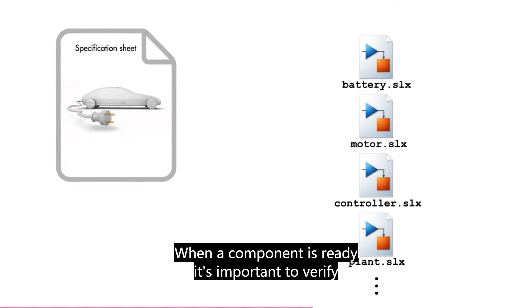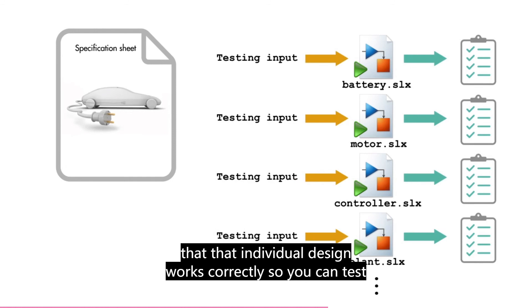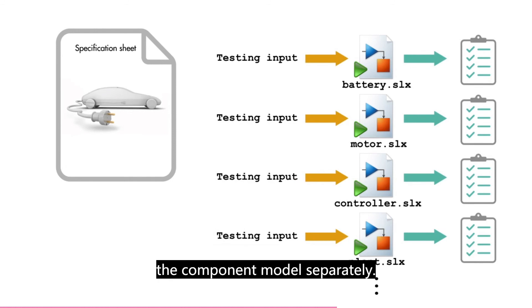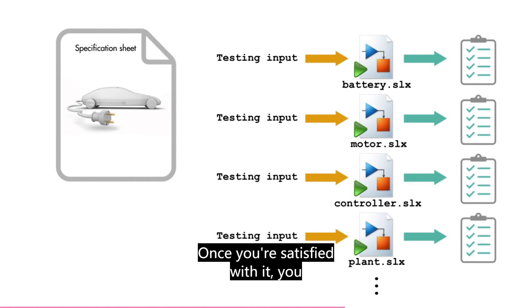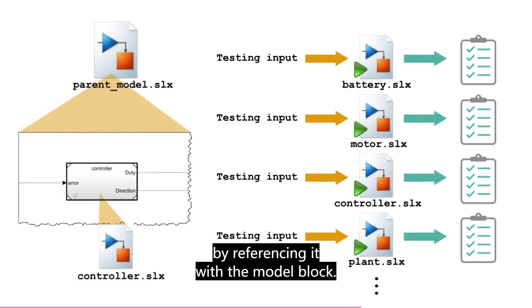When a component is ready, it's important to verify that that individual design works correctly, so you can test the component model separately. Once you're satisfied with it, you can further integrate it into its parent model by referencing it with the model block.